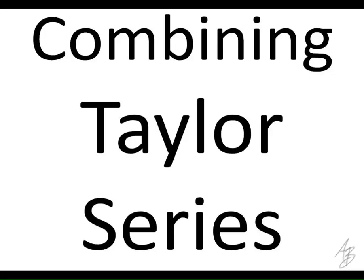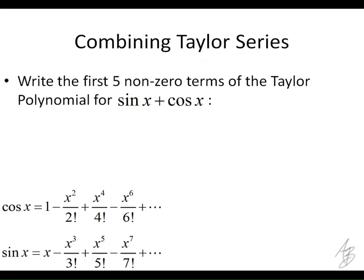What we're going to be doing here is manipulating these McLaren series and Taylor series so that if we don't have something like sine of x but we have something like sine of x squared, we can write another Taylor series or McLaren series without having to go through the whole process of creating our own.